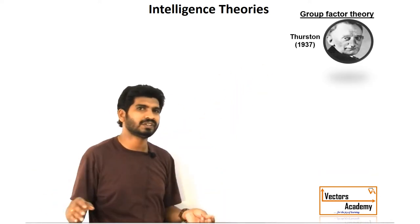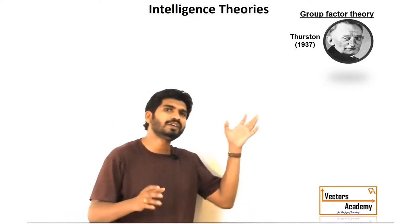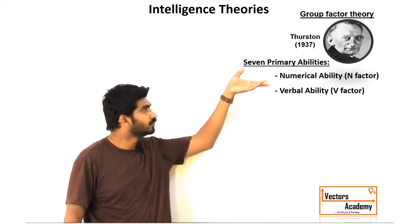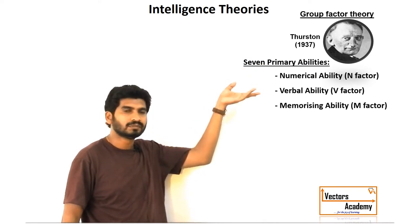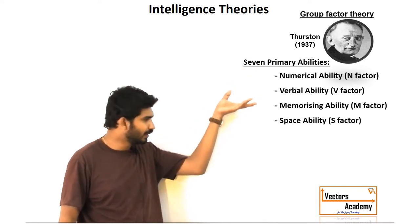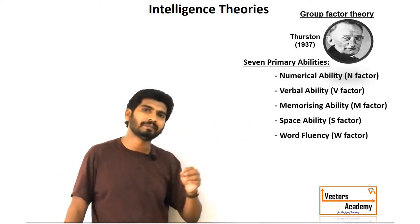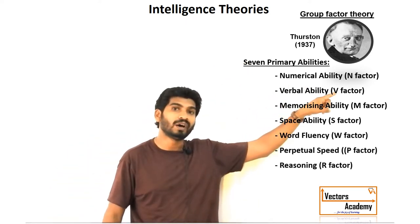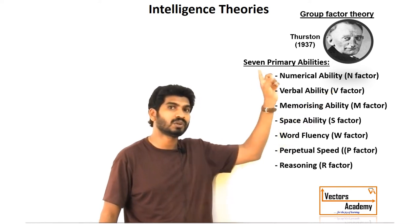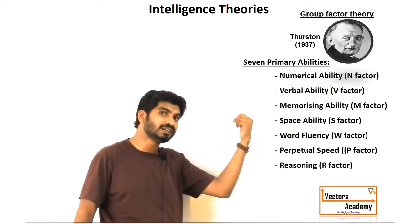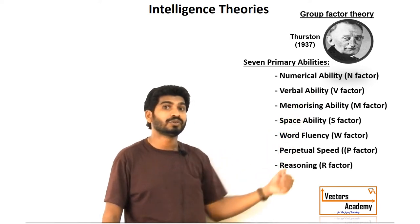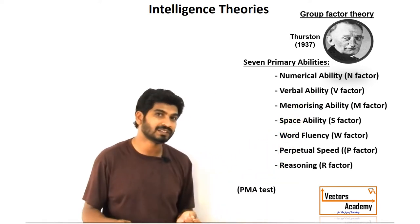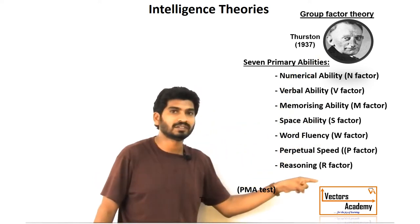Thurstone completely changed the shape of the theory. He defined different groups of tasks — for example, the numerical group, the verbal group, the memorizing power group — and all these seven groups were defined by him. For each task, we need one factor: the numerical task requires the N factor, the verbal task requires the V factor. He designed a test called the Test of Primary Mental Abilities to measure all these factors.